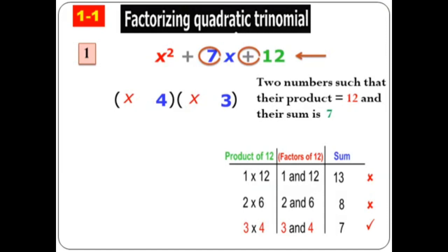Now what about the signs? If the last term is positive, the two brackets take the sign of the middle term. The middle term here is plus seven x, so the two brackets both take plus. The result is (x + 4)(x + 3). If I multiply these two brackets, I get x squared plus seven x plus 12 again.